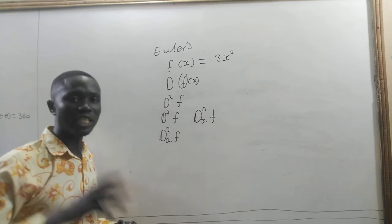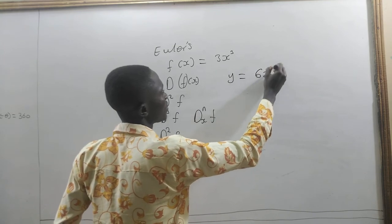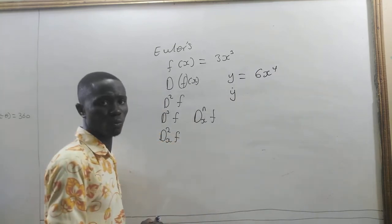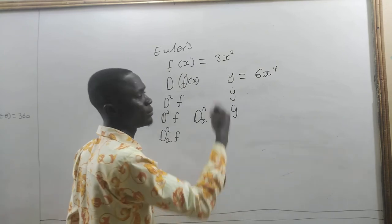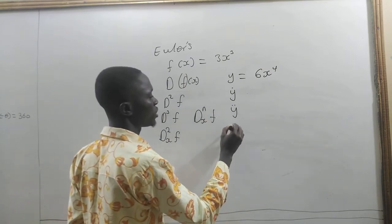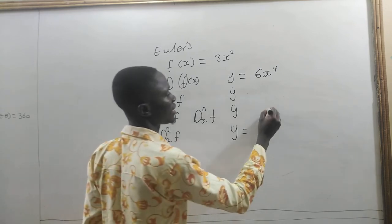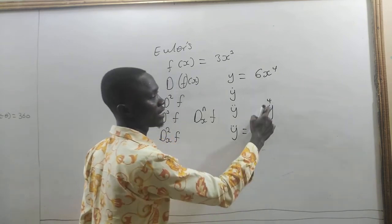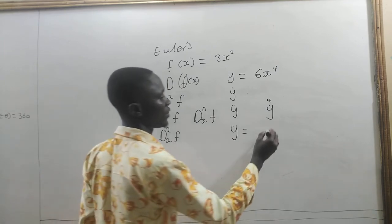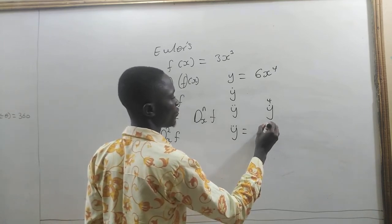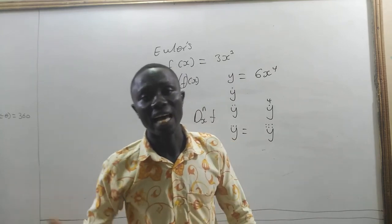Now let us take Newton's notation. If I have y equal to, say, 6x to the power 4, then if I write y with a dot at the top it means differentiate this once. If I write y with a double dot it means differentiate it twice. Three dots means differentiating it three times. Four dots means we have to differentiate it four times. Six dots means we are differentiating it six times.